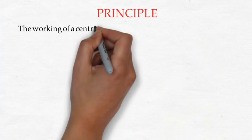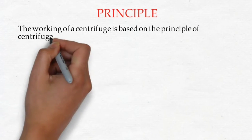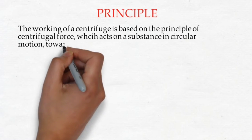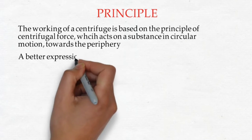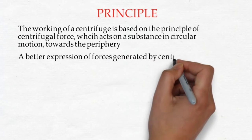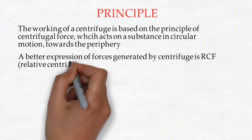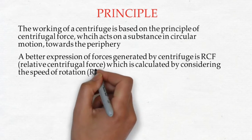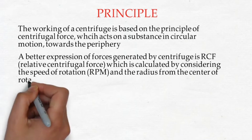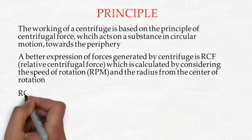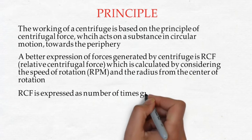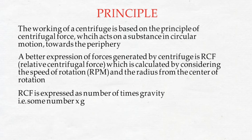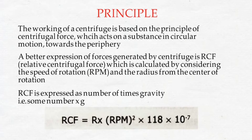The working of a centrifuge is based on the principle of centrifugal force, which acts on a substance in circular motion towards the periphery. A better expression of forces generated by a centrifuge is RCF — Relative Centrifugal Force — calculated by considering the speed of rotation in RPM and the radius from the center of rotation. RCF is expressed as a number of times gravity, and the formula is: RCF = radius × RPM² × 118 × 10⁻⁷.